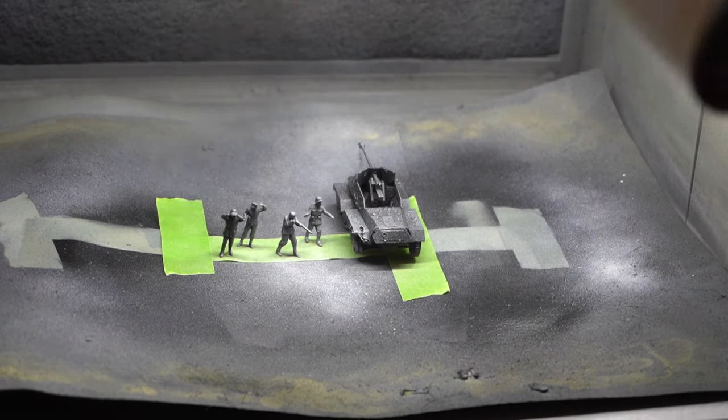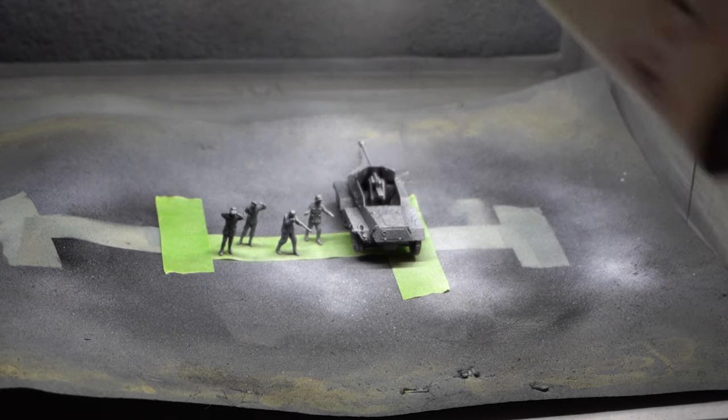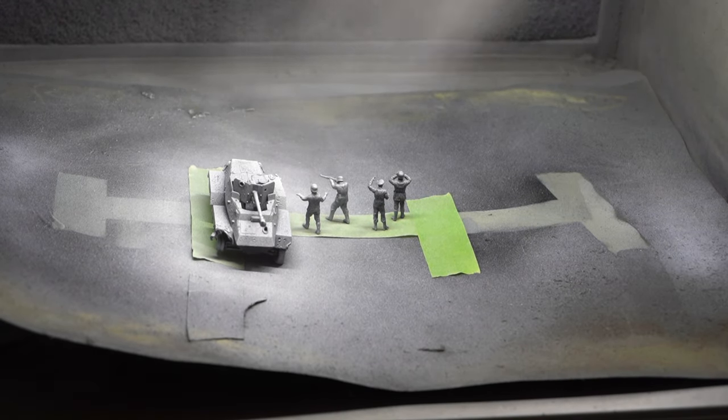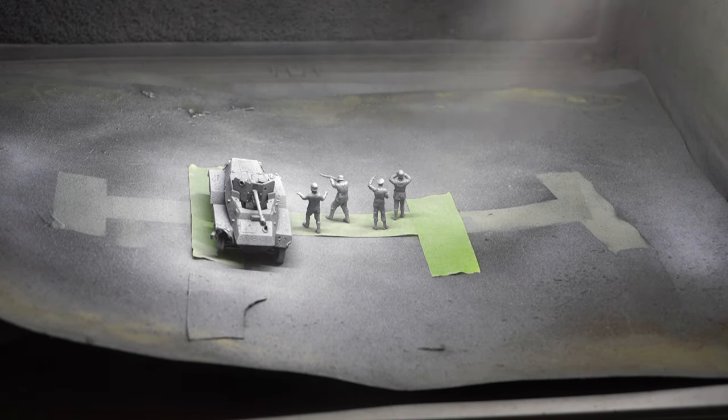This is a bit like pre-shading, but you only do it directionally from above as if the sun is beating down onto these figures. This is going to create an interesting effect when we come to paint them shortly.